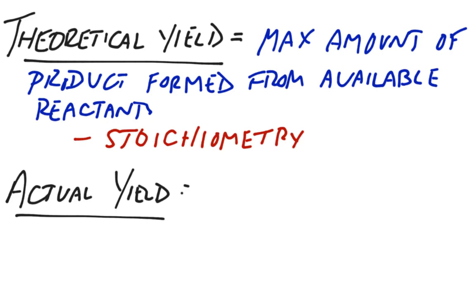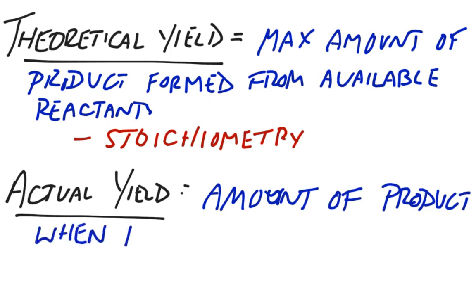The actual yield is a little bit different. The actual yield is what you get when the experiment is actually performed. So, it's the amount of product when the experiment is conducted or when the reaction is run. For our purposes, that's either going to be provided or you're going to do it in the lab.